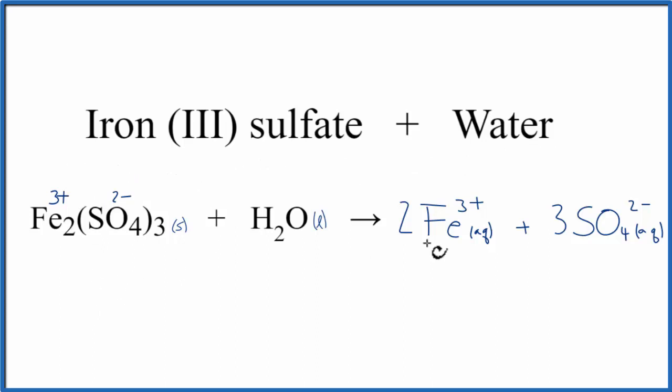It dissociates into its ions, and we write the Aq to show that they're dissolved in water. In the case of iron 3 sulfate, only a little bit of it dissociates. Most of it stays as a solid, because iron 3 sulfate is slightly soluble.